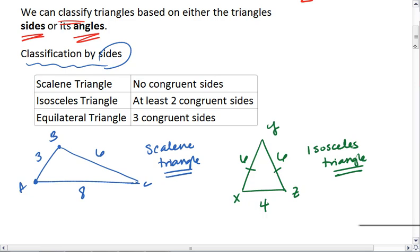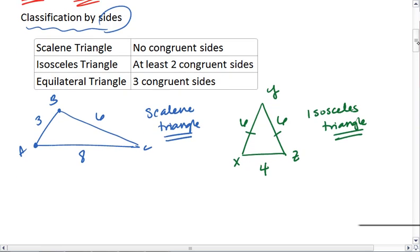And lastly, if we have a triangle that has three congruent sides, then we call this triangle an equilateral triangle.